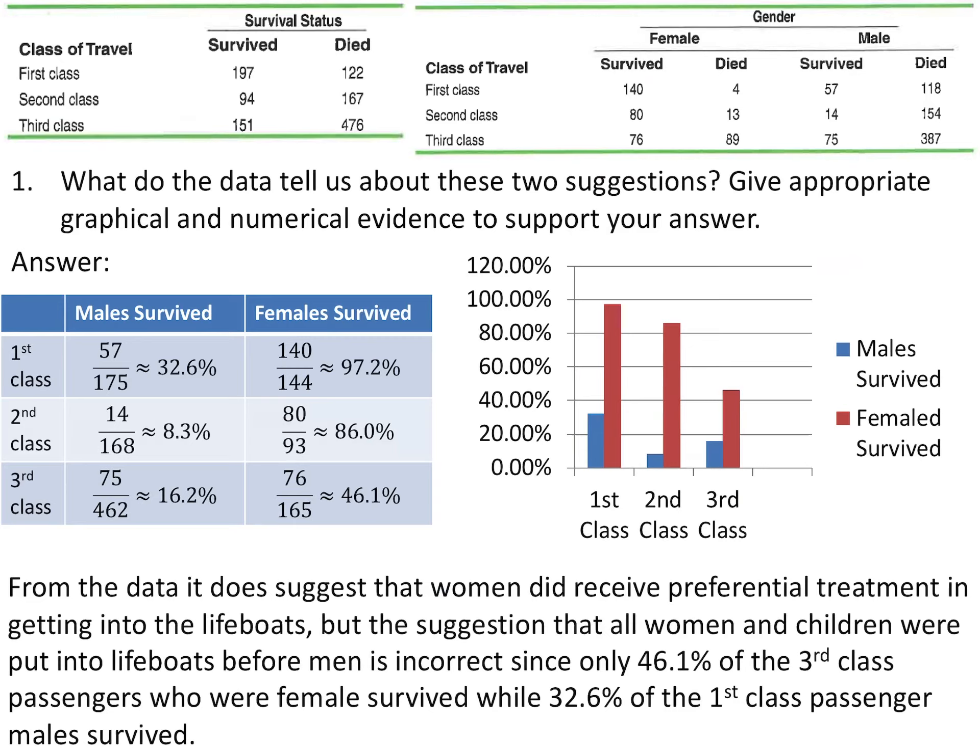We can compare this with a side-by-side bar graph. From the data, it does suggest that women did receive preferential treatment in getting into the lifeboats. But the suggestion that all women and children were put in lifeboats before men is incorrect, since only 46.1% of third class female passengers actually survived, and a very similar 32.6% of first class male passengers survived.